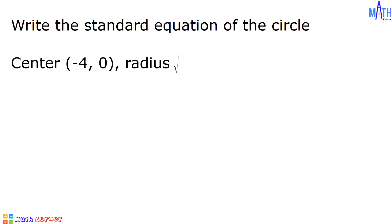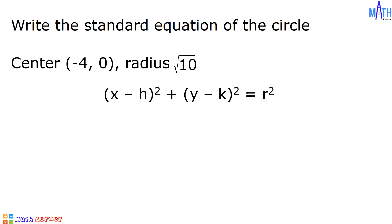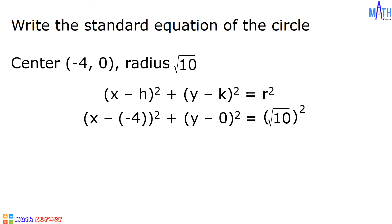Example number 3: center is (negative 4, 0) and radius is the square root of 10. The value of h is equal to negative 4 and the value of k is equal to 0. (x minus h) squared becomes (x minus negative 4) squared, plus (y minus k) squared becomes (y minus 0) squared, equals r squared, which becomes (square root of 10) squared. Simplifying: (x plus 4) squared plus y squared equals the square root of 10 times the square root of 10, which equals 10. The standard equation is (x plus 4) squared plus y squared equals 10.